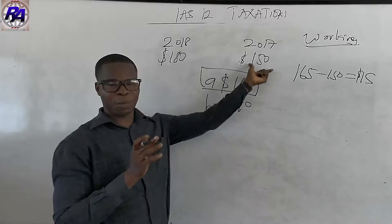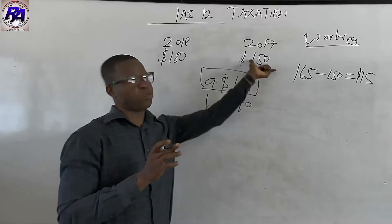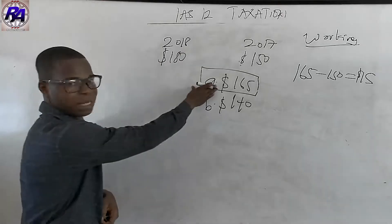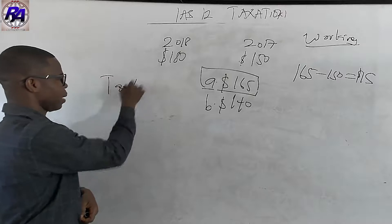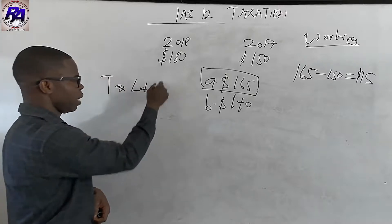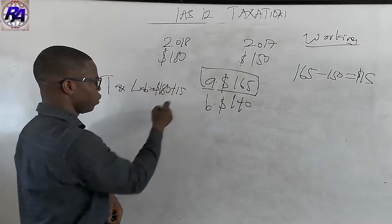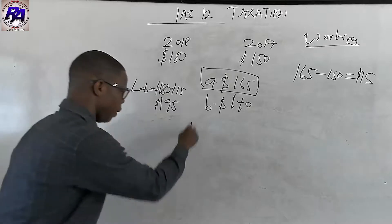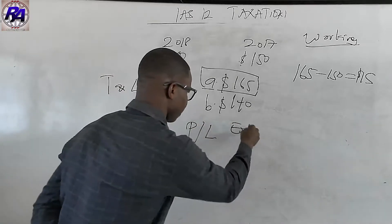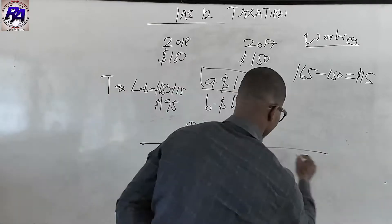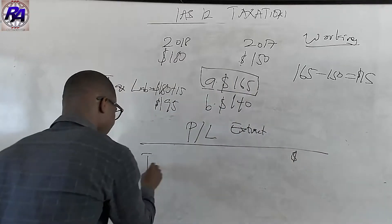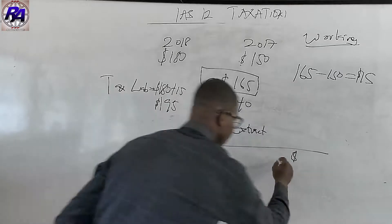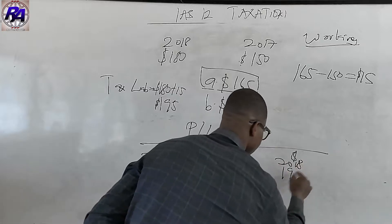Because it is an under provision, in 2018 under the first scenario, our tax liability is going to be $180 plus $15, which gives us $195. So in the P&L account extract, our tax liability for 2018 is going to be $195. The reason is because there was an under provision.